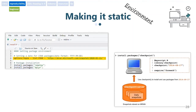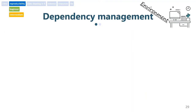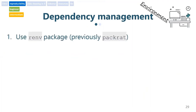There is also the checkpoint package created by Microsoft that does the exact same thing, just with less typing. A second option is to use a dependency management package specifically called renv — R for reproducible, N for environment — which is exactly what we need. It used to be called packrat, but this is the new and improved package.